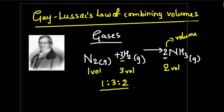He stated that when gases react, they do so in volumes which bear a simple ratio — 1:3 between nitrogen and hydrogen — and also to the volume of the gaseous product if formed. Here ammonia is a gaseous product with volume 2, so the ratio is 1:3:2. This is Gay-Lussac's law of combining volumes, provided all volumes are measured at the same temperature and pressure.